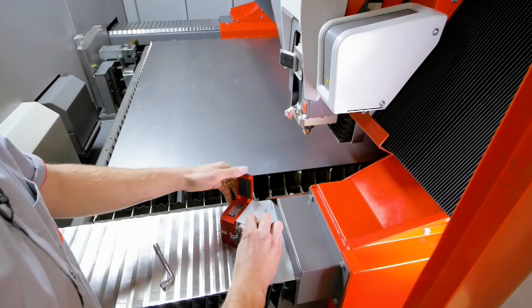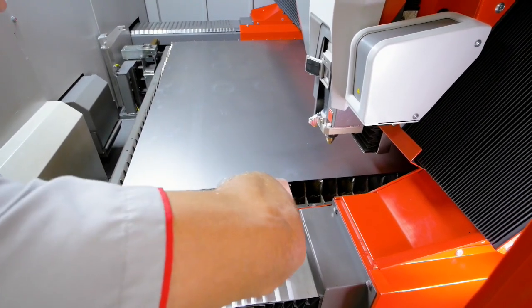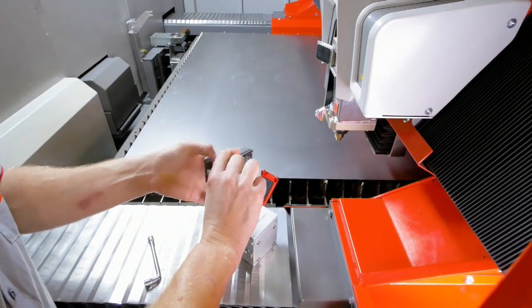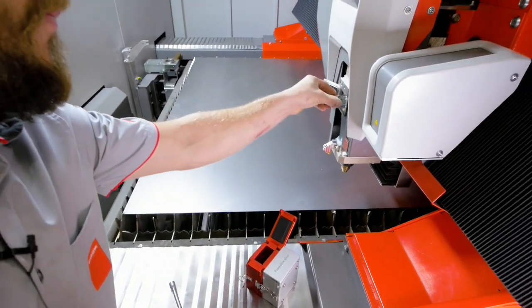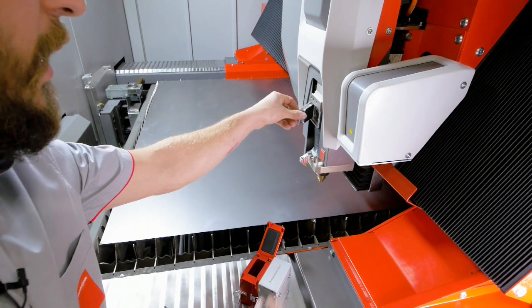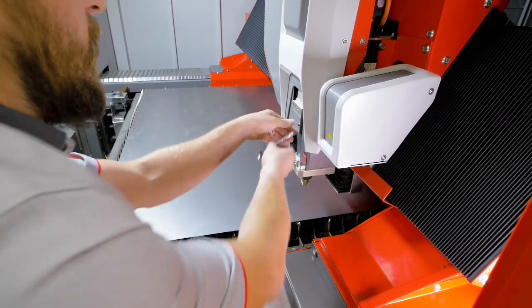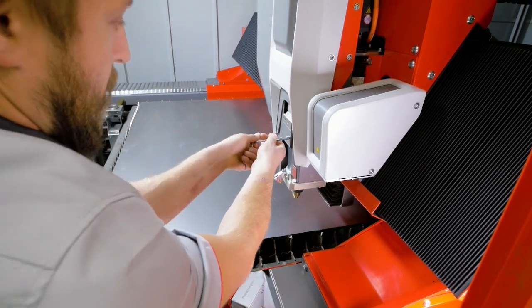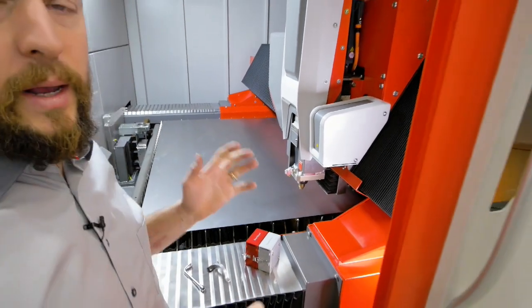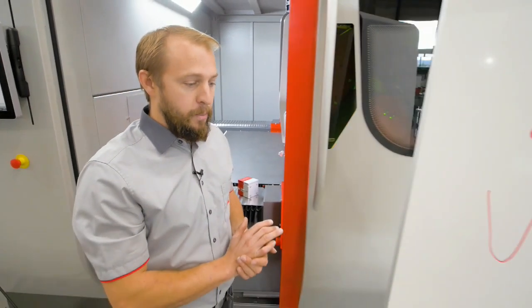We just put our protective glass in, take out our beam shaper, insert it in the cutting head. Make sure everything is clean and closed, and we are ready for cutting with the beam shaper.